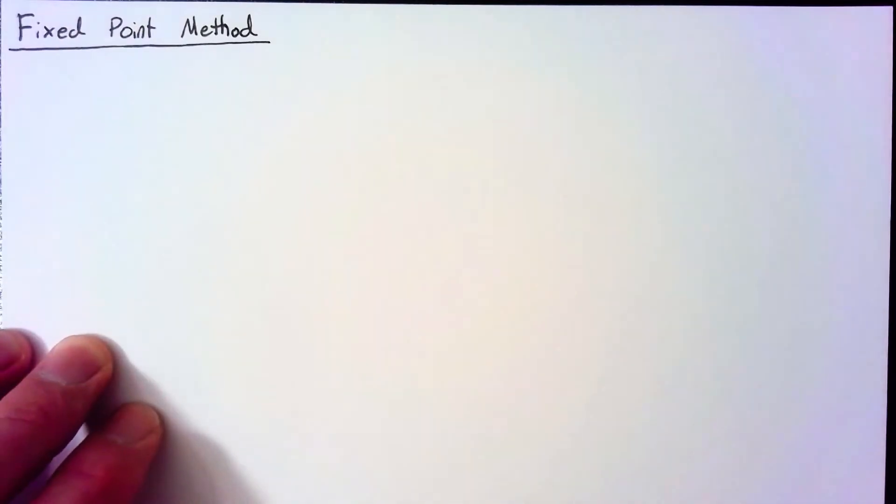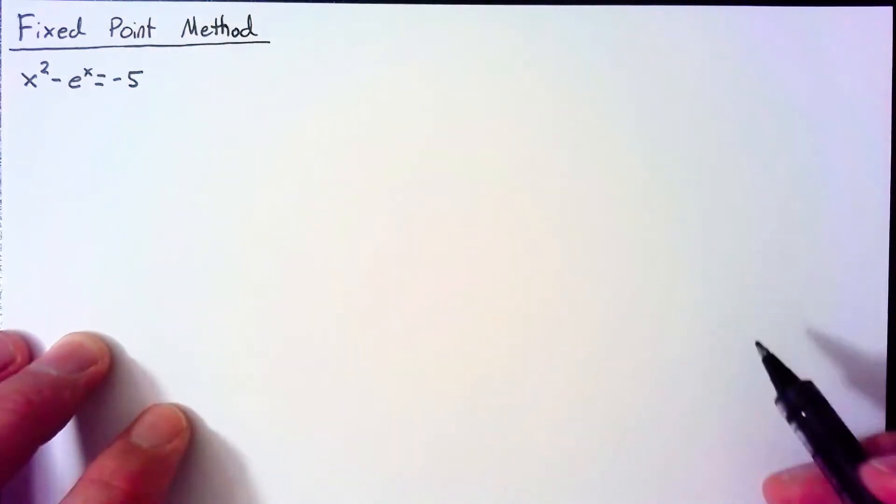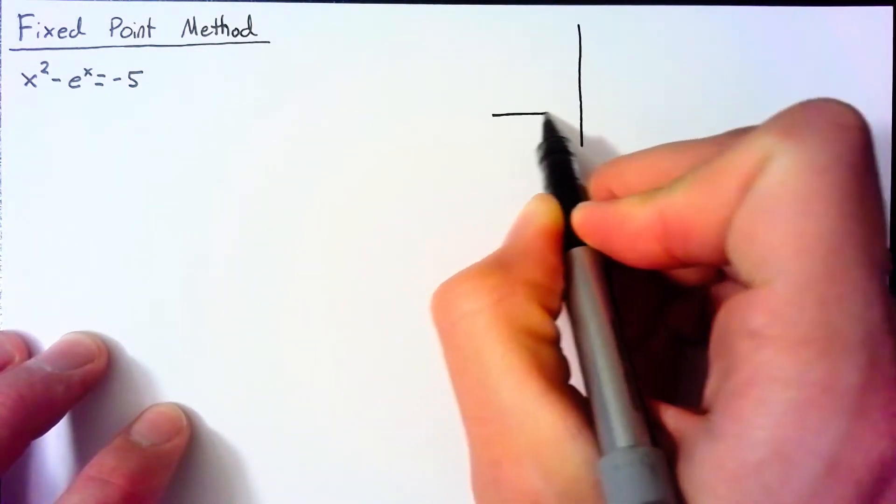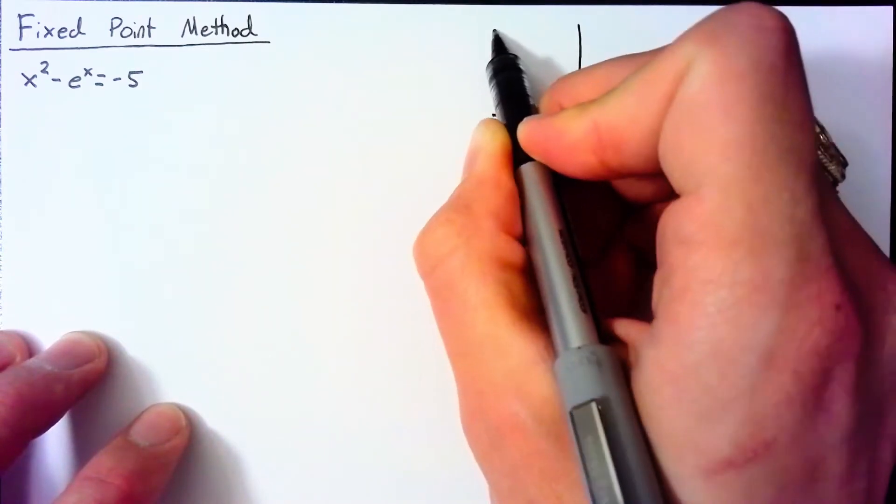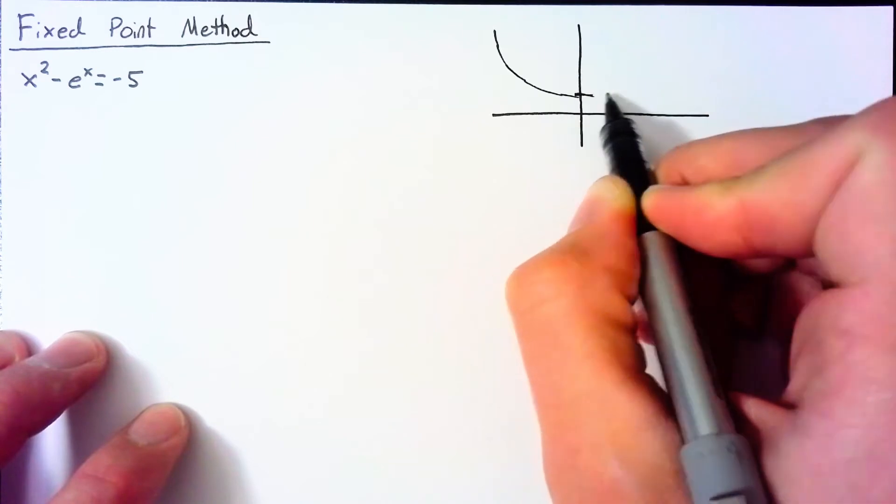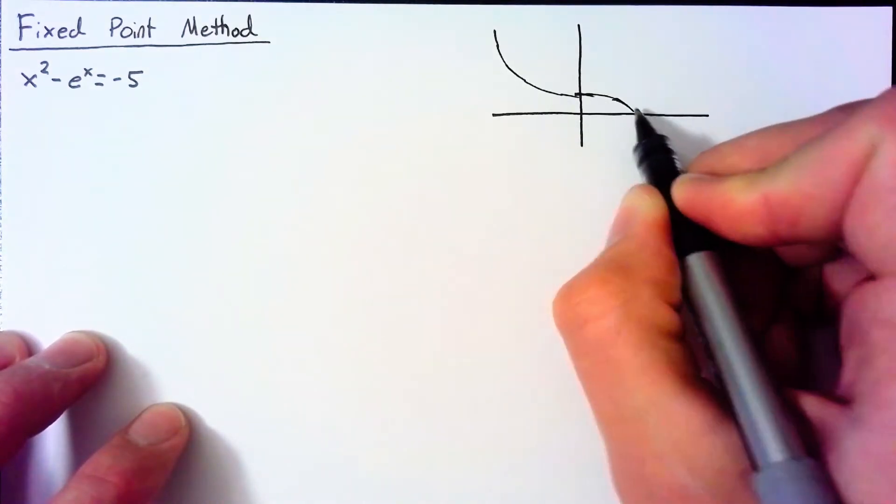So for our example, let's look at the same function that we've been using. So x² - e^x = -5. And our plot for this, once again, looks something along the lines of a parabola on the left hand side into a negative e^x on the right hand side of the y-axis.